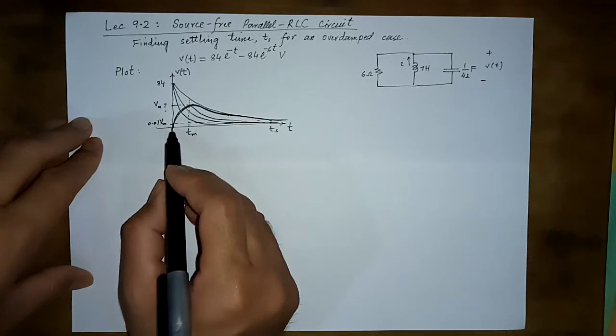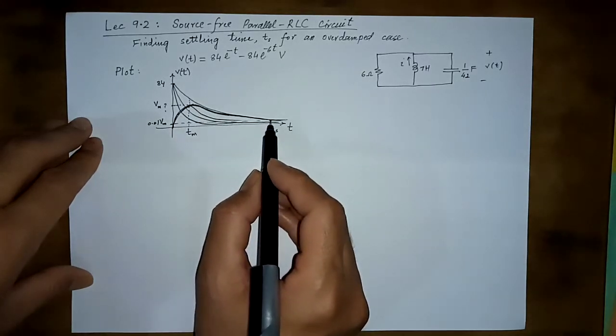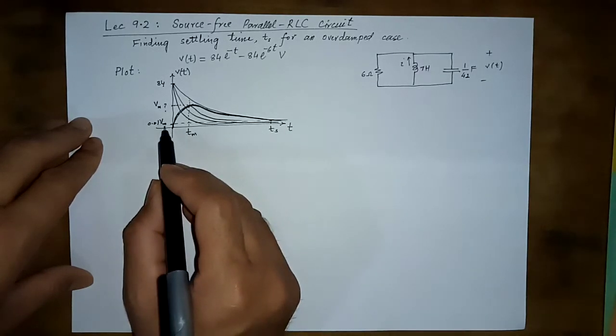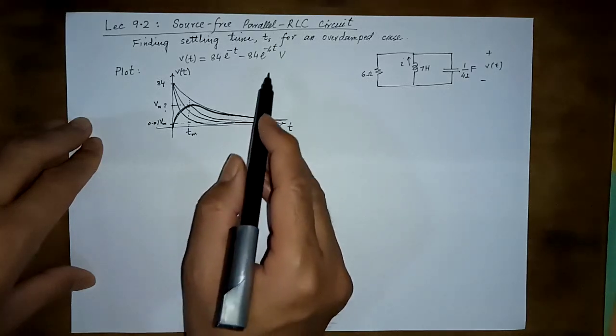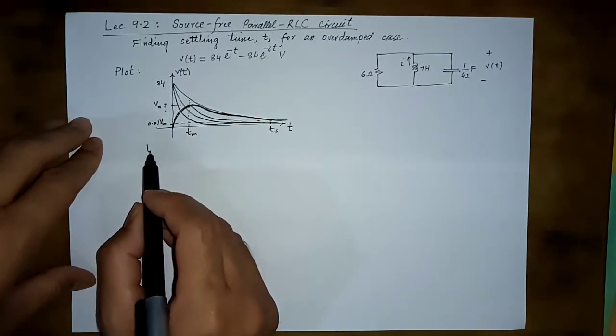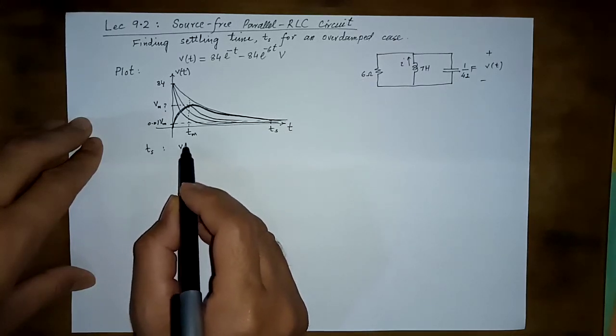There will be a time when it will reach this value here, but we ignore that because we want to find this time after which it will stay lower than this value. So this time is not under consideration. Settling time by definition is the time for which the voltage and even later on becomes less than or equal to 0.01 of the max value.